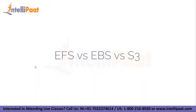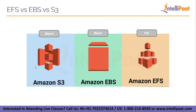EFS versus EBS versus S3. At first glance, these three services seem identical to each other, but let us briefly understand each one. Amazon EFS is a file storage service for use with Amazon compute and on-premises services — including EC2 instances, containers, and serverless. EFS provides a file system interface, file system access semantics, and concurrently accessible storage for up to thousands of EC2 instances, making it scalable.